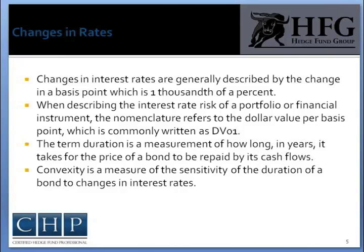The term duration is a measure of how long, in years, it takes for the price of a bond to be repaid by its cash flows. Bonds with higher duration carry more risk and have higher price volatility than bonds with lower duration. Rising interest rates mean falling bond prices, while declining interest rates mean rising bond prices. The bigger the duration number, the greater the interest rate risk or reward for bond prices.